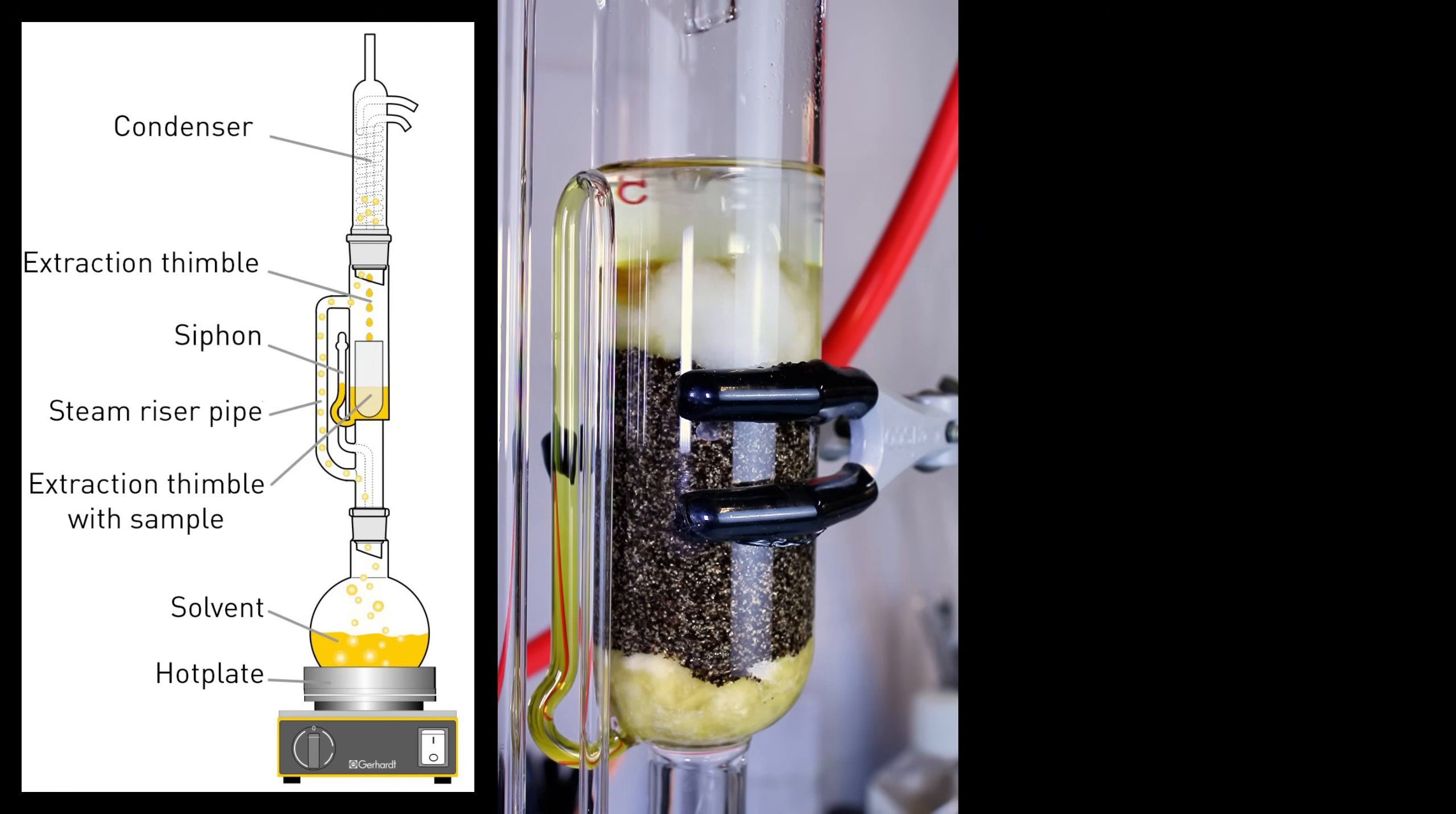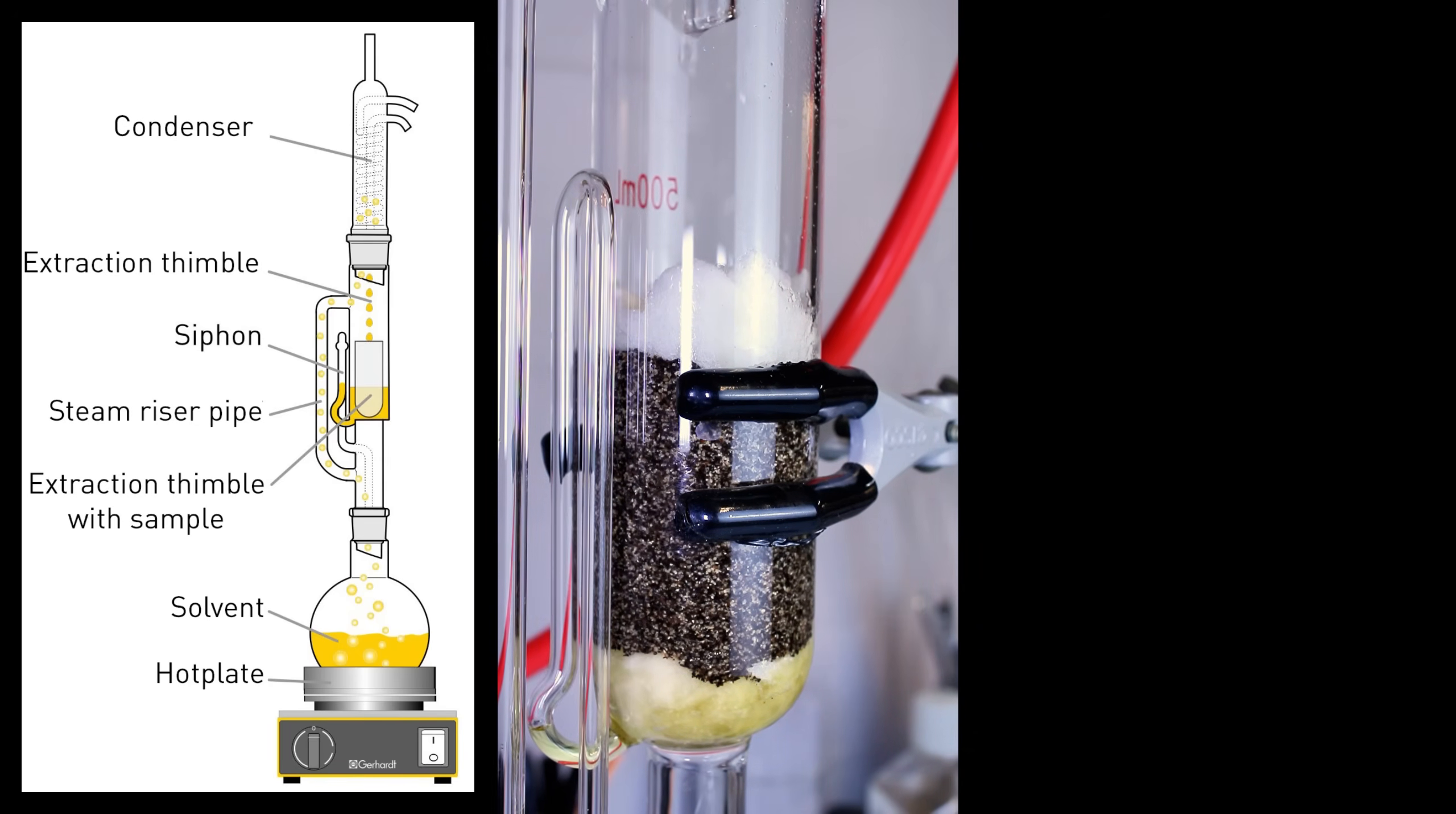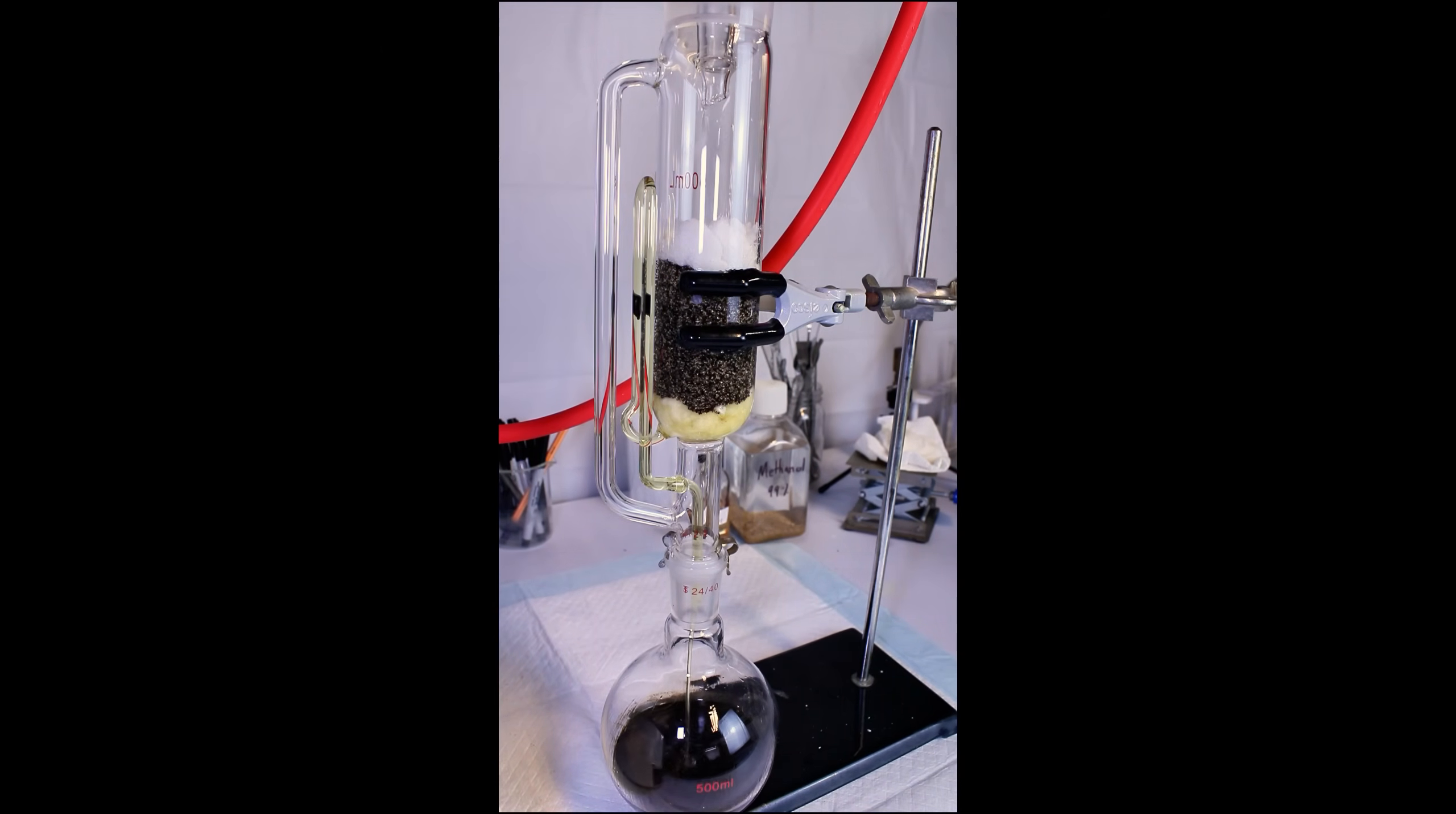Anyway, I go ahead and let this cycle run twice, and then just before the siphon triggers a third time, I remove the heating mantle, allow it to cool, and then trigger a third cycle by dripping a bit of isopropyl through the top of the condenser.